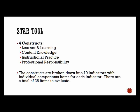The STAR tool has four constructs: the learner and learning, content knowledge, instructional practice, and professional responsibility. These four constructs are then broken down into 10 individual indicators, and these 10 indicators align directly with the Kansas Professional Education Standards. Each of these indicators is then broken down into individual components. There are 25 components that an evaluator will need to evaluate using the STAR tool.